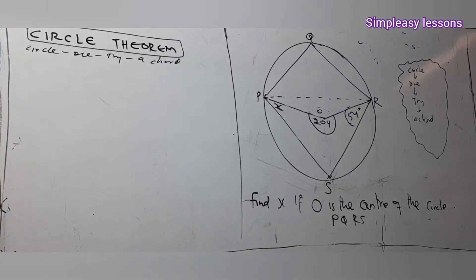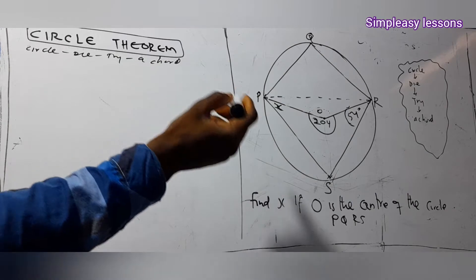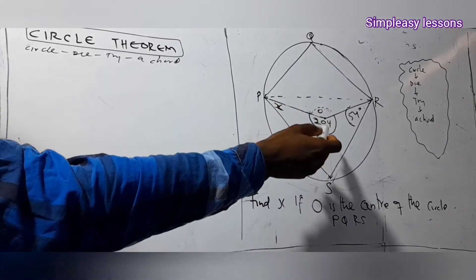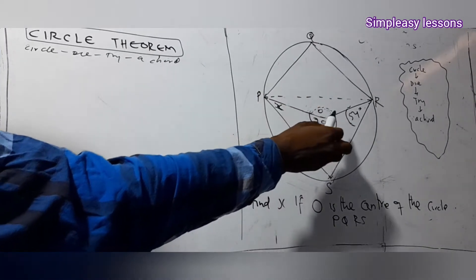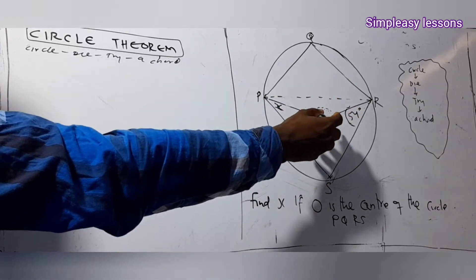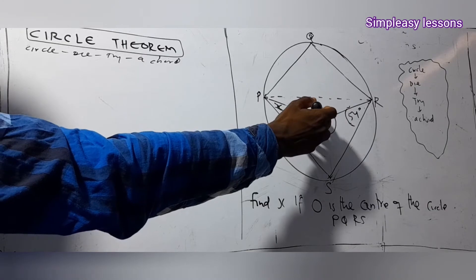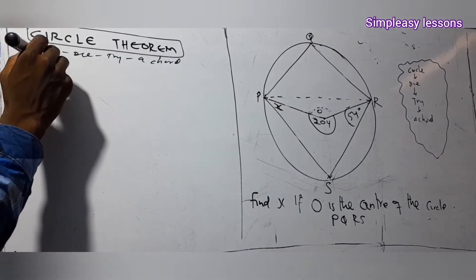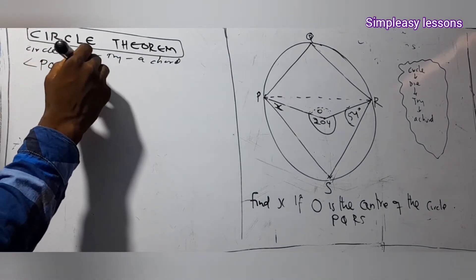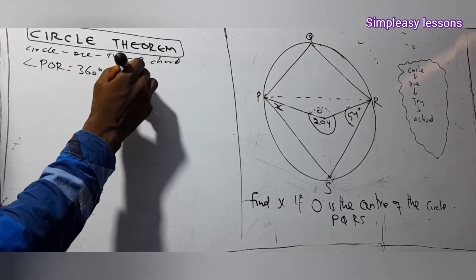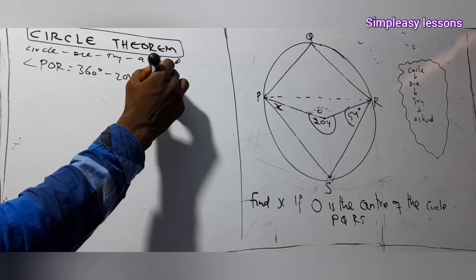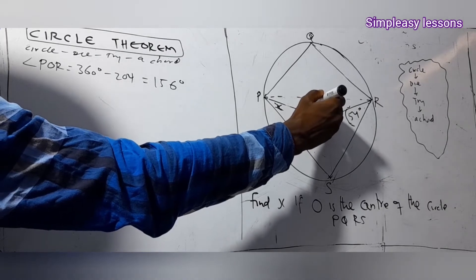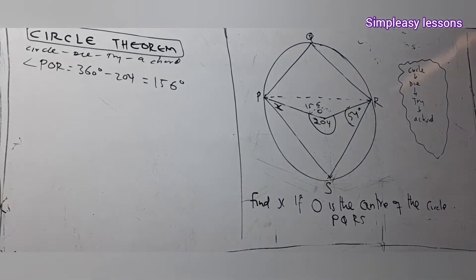The first thing to tackle is the circle — check if there is a circle or angle at a point. There's a circle here and the total angle at a point gives us 360 degrees. So angle POR: we separate from 360. That means 360 minus 204 gives us 156 degrees. So angle POR is 156 degrees.